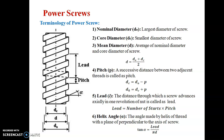For a triple-start screw, lead equals 3 times the pitch. The helix angle, denoted by alpha, is the angle made by the helix of a thread with a plane perpendicular to the axis of the screw. It is given by: tan(α) = lead / (π × d).